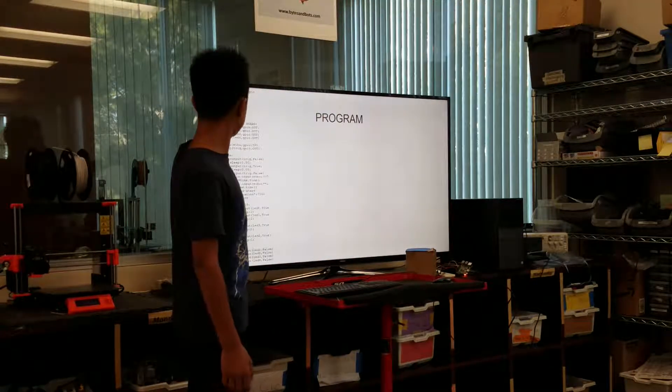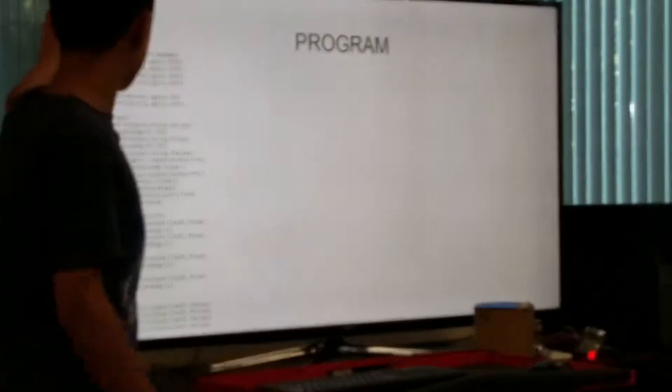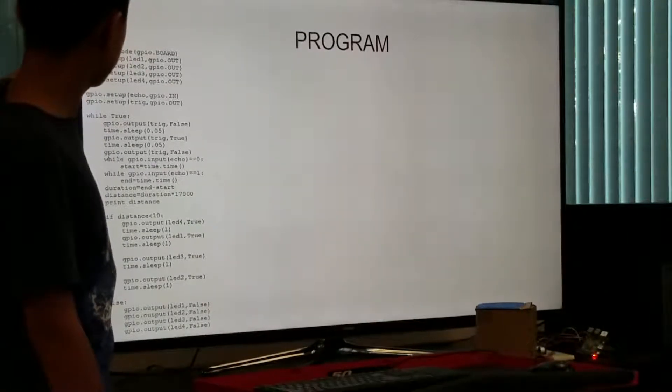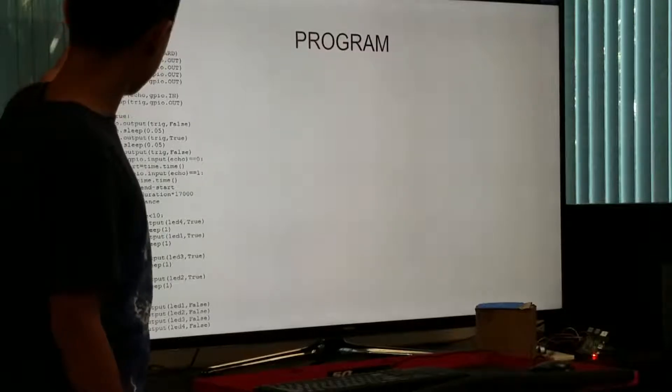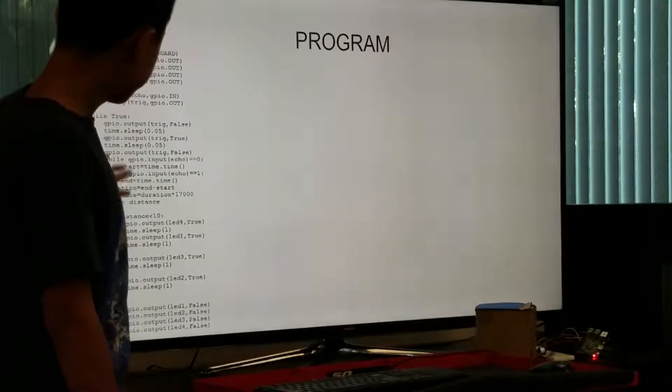So this is my program. These are the lights, and this is echo and trigger. These are GPIOs, and these are the output.